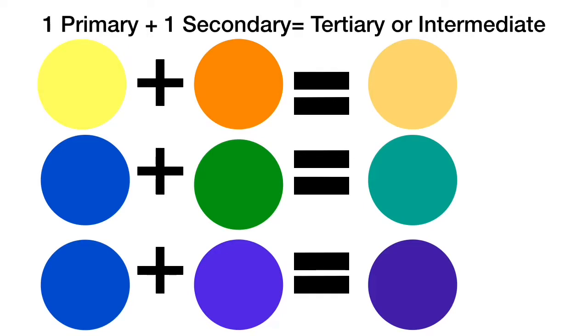Yellow plus orange equals yellow orange. Blue plus green equals blue green. And blue plus violet equals blue violet. All of those are different tertiary or intermediate colors.